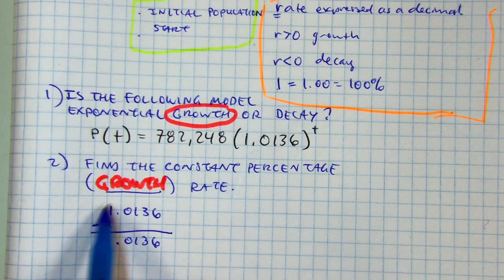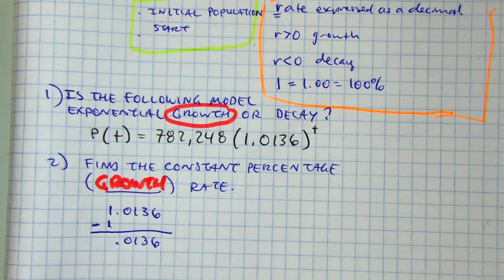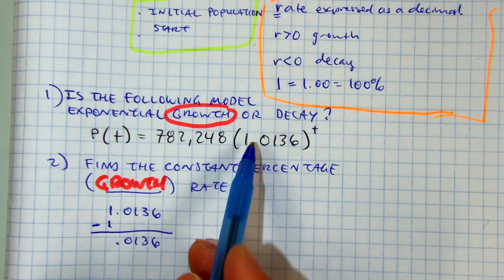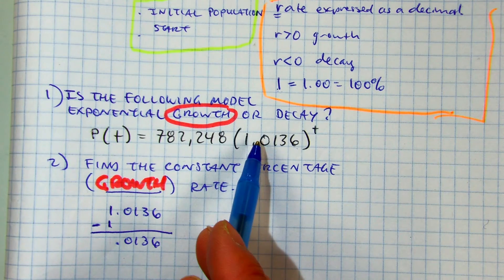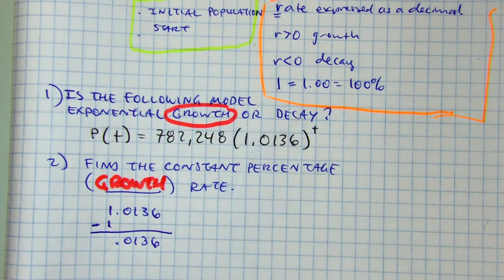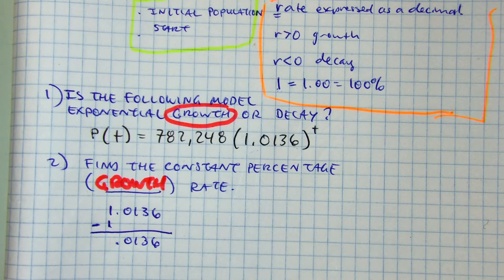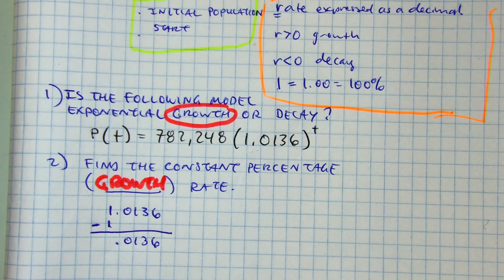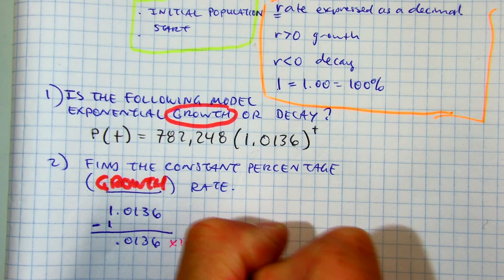Because, basically, I'm trying to figure out what's the percent of growth, and then I just have to convert this into a percentage. To convert it to a percentage, I just have to move the decimal place. Essentially, what you're doing is you're multiplying by 100.